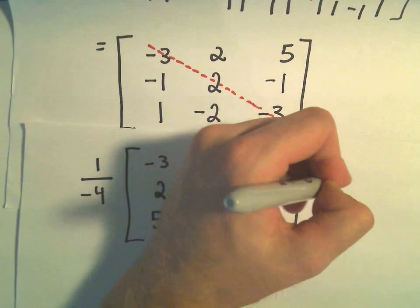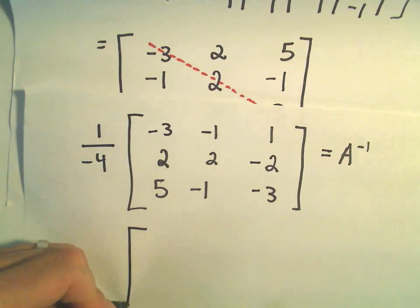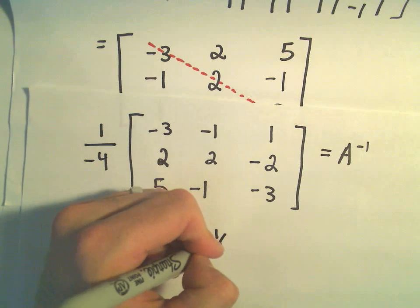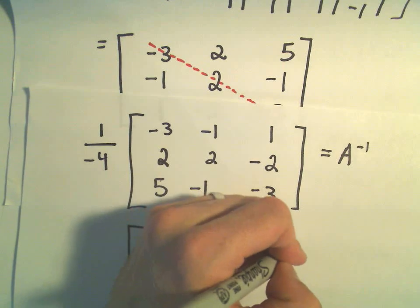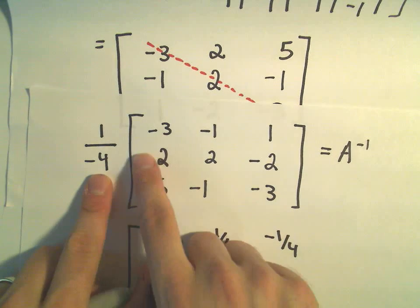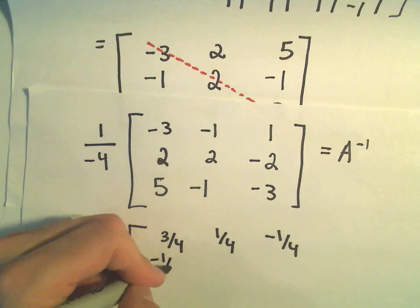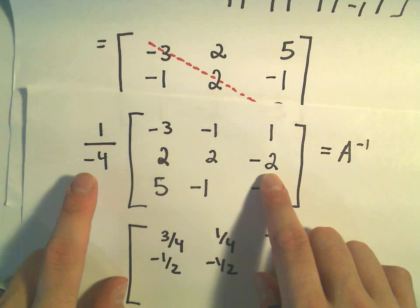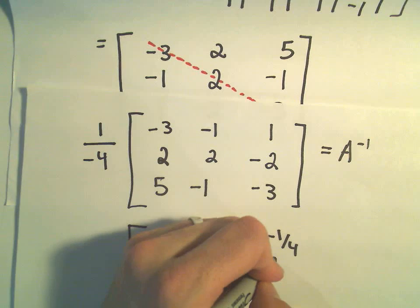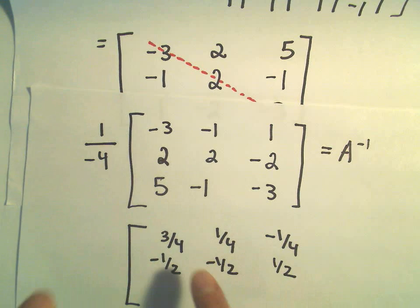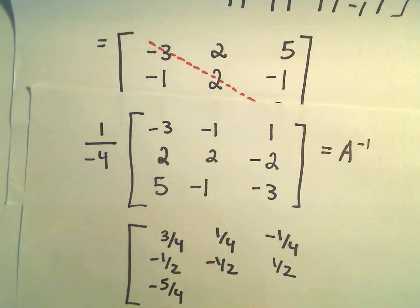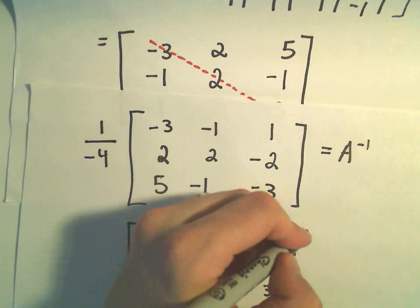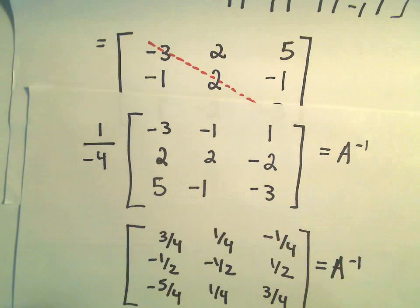This is our inverse matrix. Simplifying: negative 3 over negative 4 = positive 3/4; then 1/4 and negative 1/4 for the first row. Negative 2/4 = negative 1/2; negative 2/4 = negative 1/2; negative 2 over negative 4 = positive 1/2. Negative 5/4; positive 1/4; positive 3/4. And now we have found our inverse matrix.